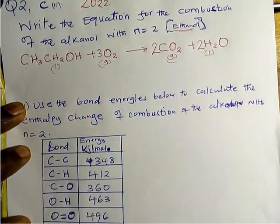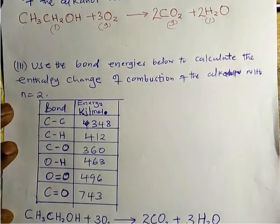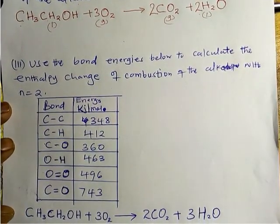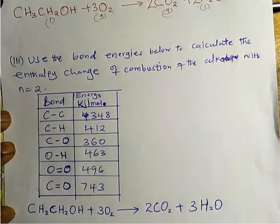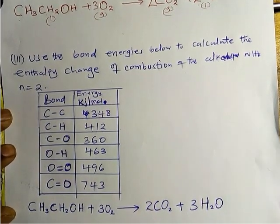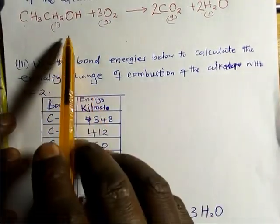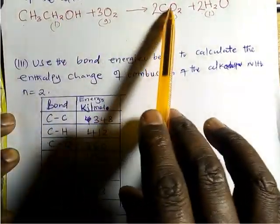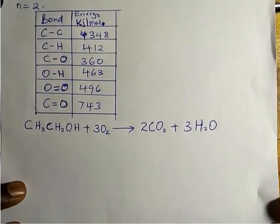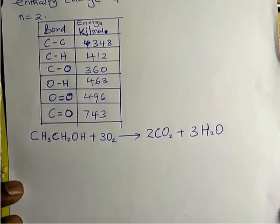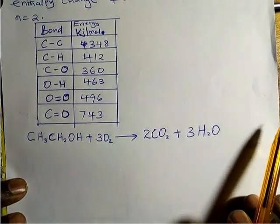Let us go to part b, roman numeral 3: use the bond energies below to calculate the enthalpy change of combustion of the alkanol with n equal to 2. We want to calculate the heat of combustion using this equation. I have rewritten the equation, and the next important step is to draw the open structural formula of everything involved.